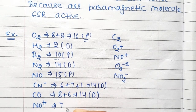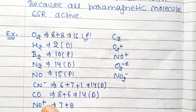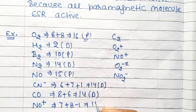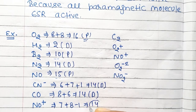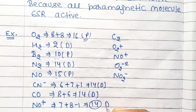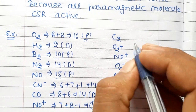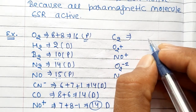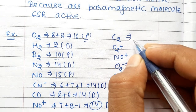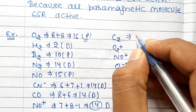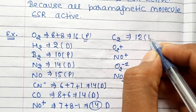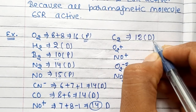For NO⁺: nitrogen has atomic number 7, oxygen has atomic number 8, but there is a positive charge so minus 1, giving a total of 14 electrons. So NO⁺ is diamagnetic in nature. For C2: carbon has atomic number 6 and there are 2 carbons, so the total electrons is 12. So C2 is diamagnetic in nature.